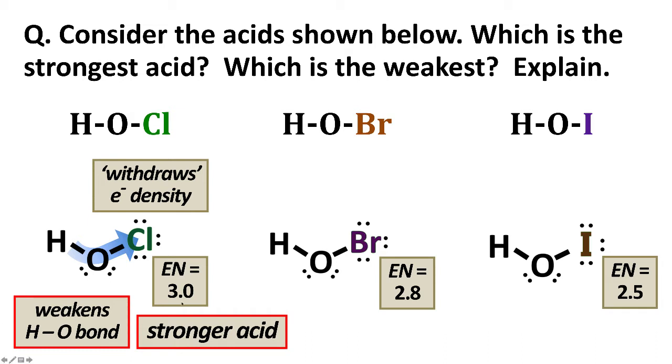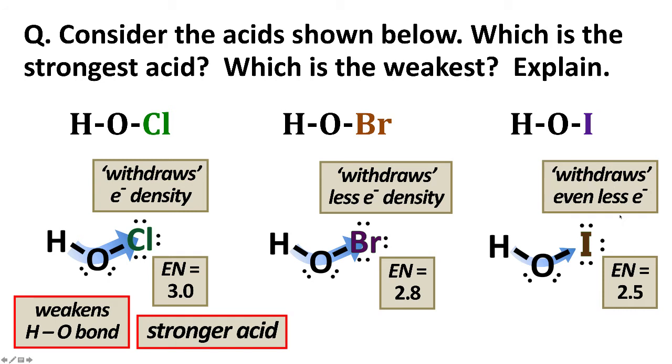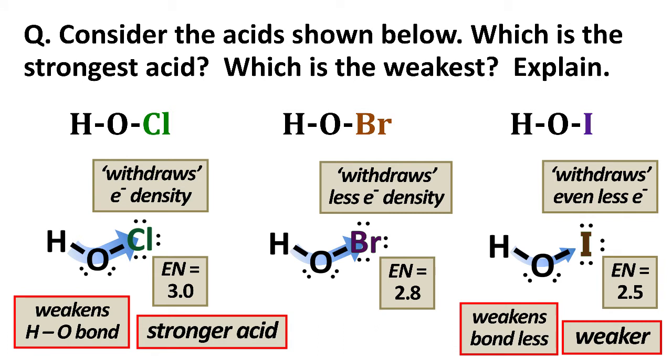Now, Br will do a similar thing to Cl, but not as strongly. It has a smaller electronegativity, 2.8 compared to 3.0. So it withdraws less electron density than Cl would, and makes a smaller effect of weakening the HO bond. And then HOI, same idea, but even less electronegative. So it withdraws even less electron density than either Br or Cl. And so that will weaken the bond even less, and will therefore make the acid even weaker.